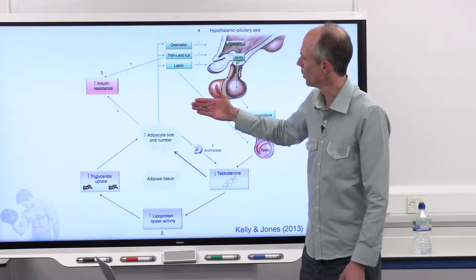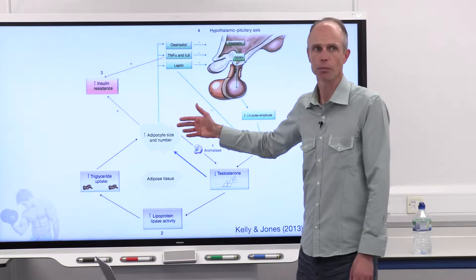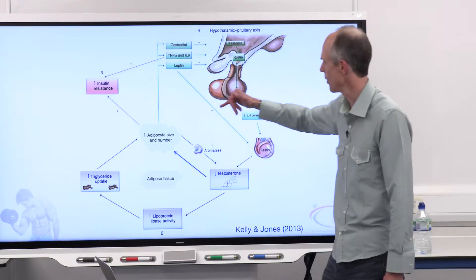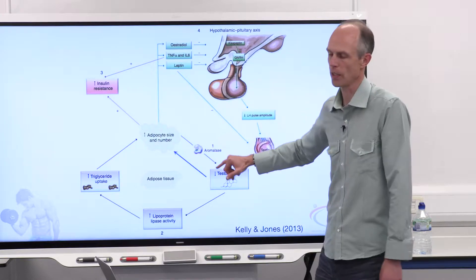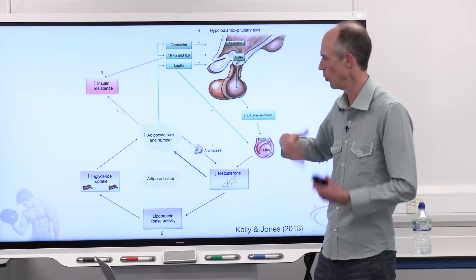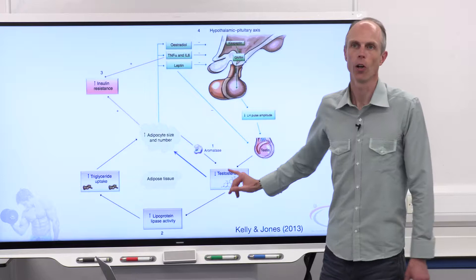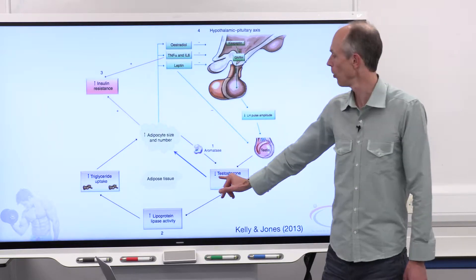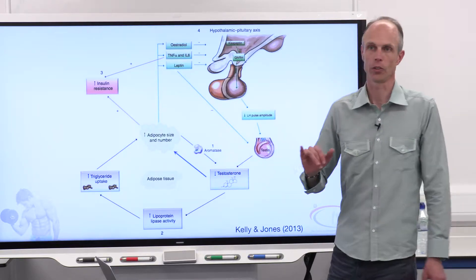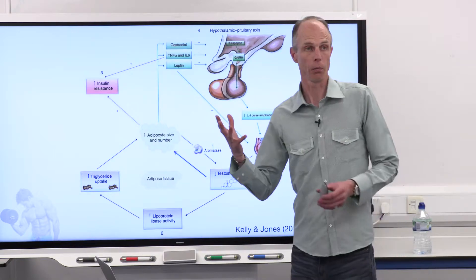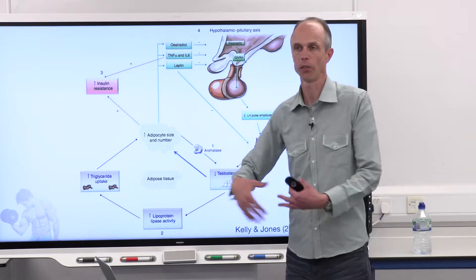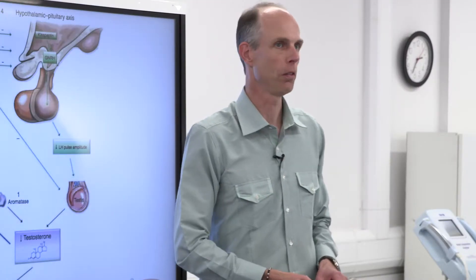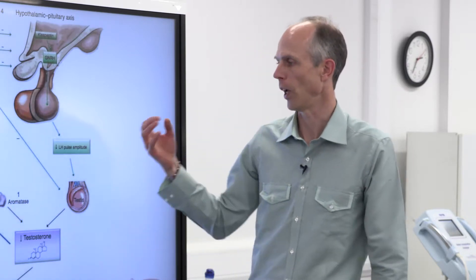But if we start in the middle here, we've got the adipocytes. Body fat has an aromatisation effect or aromatase effect on testosterone. So testosterone gets converted to estrogen by various mechanisms, but one of them is increase in body fat, increase in adipocytes.